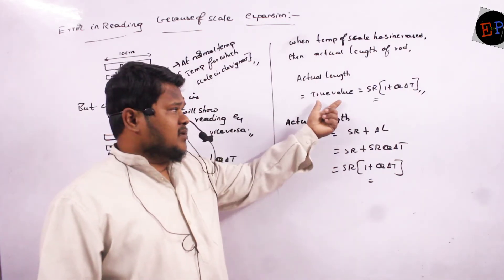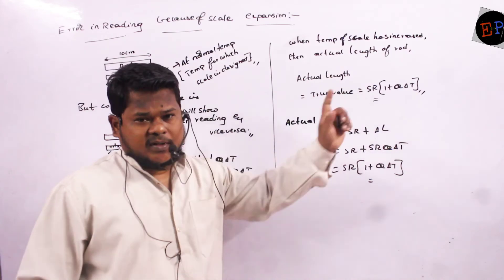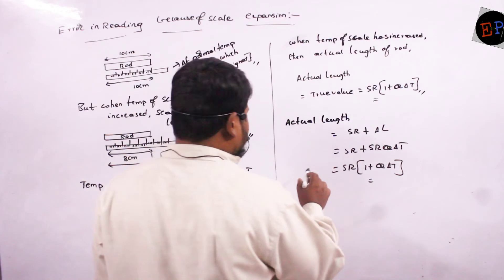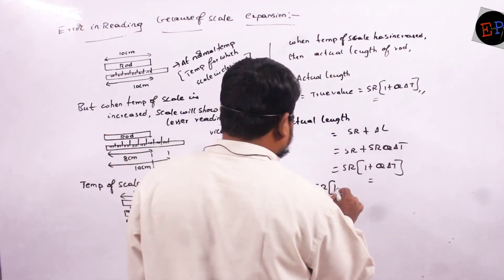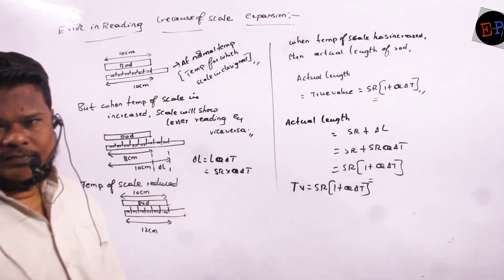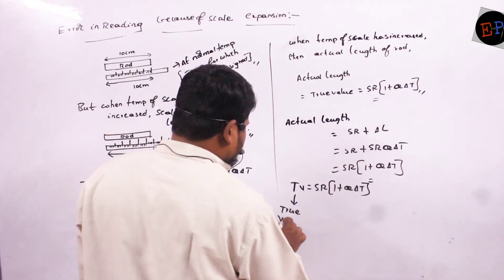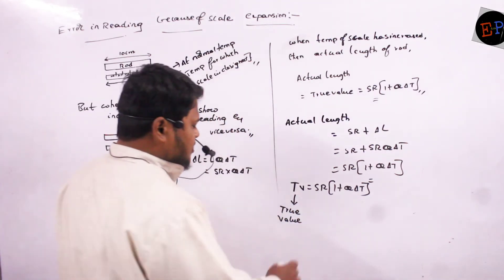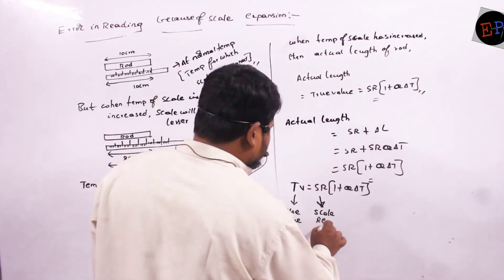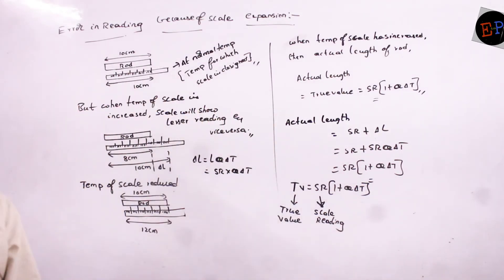Just remember this formula: actual length equals true value equals scale reading multiplied by (1 + α∆T). You can write it as: Tv = Sr × (1 + α∆T), where Tv is the true value or actual length, and Sr is the scale reading.